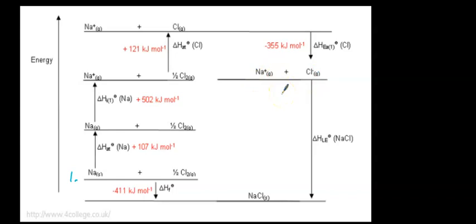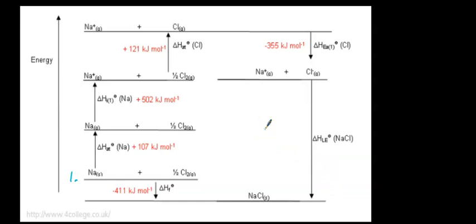Now we have sodium ions and chloride ions. They come together to form solid sodium chloride. The energy released when ionic bonds form — the same as the energy required to break ionic bonds — is known as lattice energy. Notice this step is also exothermic: energy is released when attractive forces form. Here we're forming attractive forces between the positive sodium ions and the negative chloride ions, so that process is exothermic.